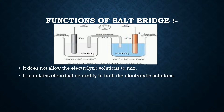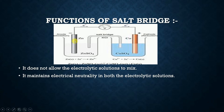The second function is that it maintains electrical neutrality in both the electrolytic solutions. At the Zn electrode, the Zn is going to decompose into Zn2+ ions and give away extra electrons. After Zn decomposes into Zn2+ ions, those Zn2+ ions move into the ZnSO4 solution, adding a positive charge. To neutralize this, KCl dissociates into K+ and Cl− ions. Since Zn2+ ions are present, Cl− which is negatively charged will flow into the electrolytic solution to neutralize those positive ions.